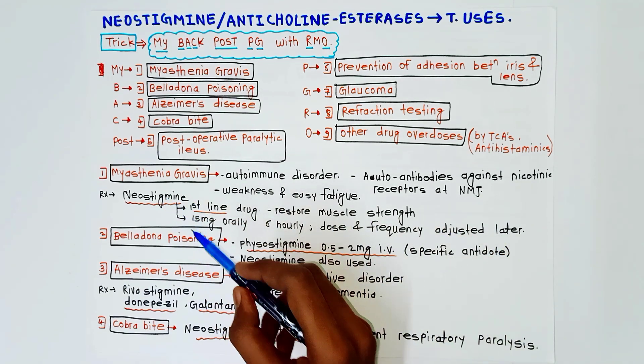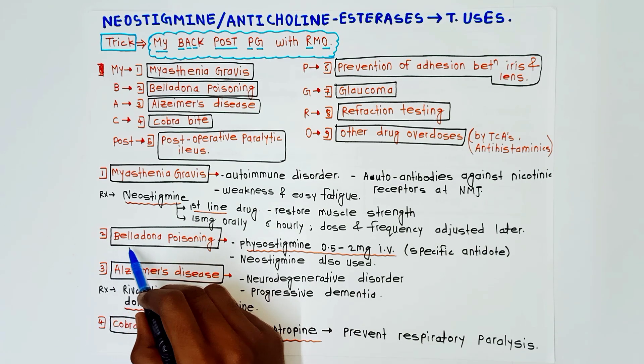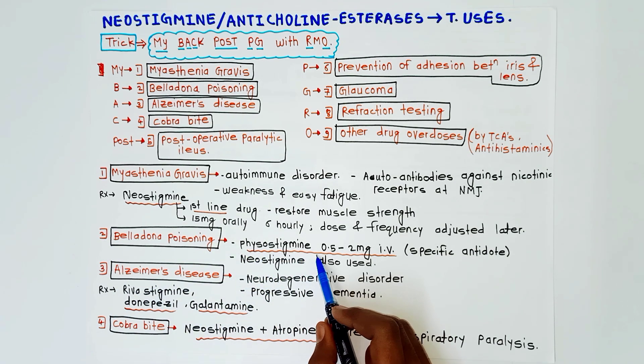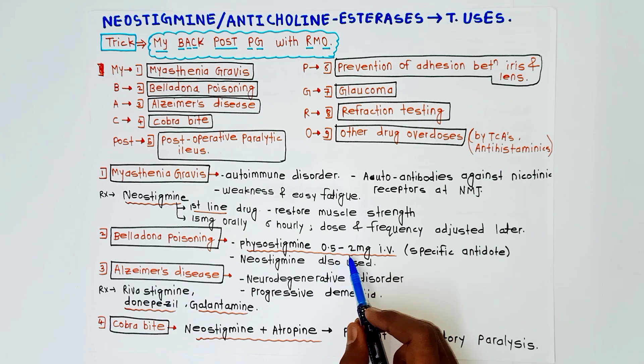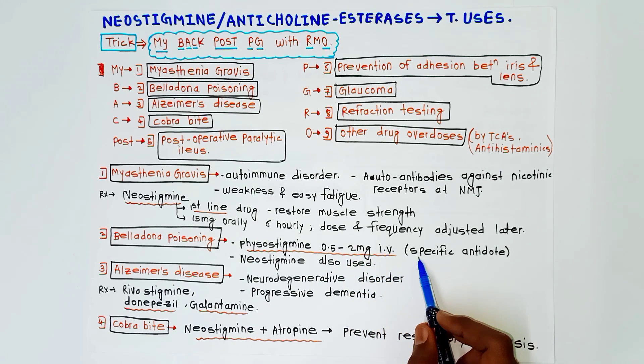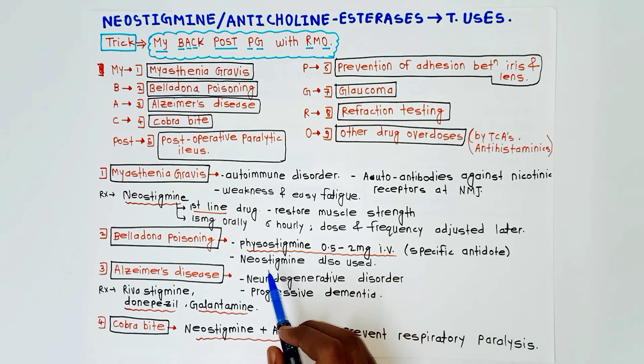Next is belladonna poisoning. In this case, physostigmine 0.5 to 2 mg intravenously is used — it is a specific antidote. Neostigmine is also used in this case.